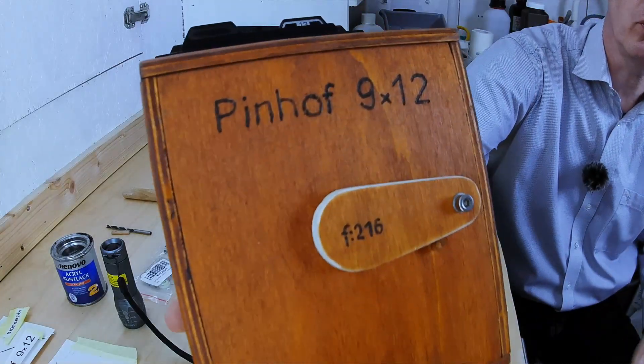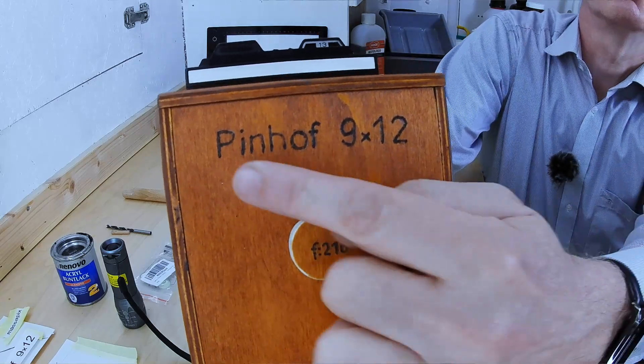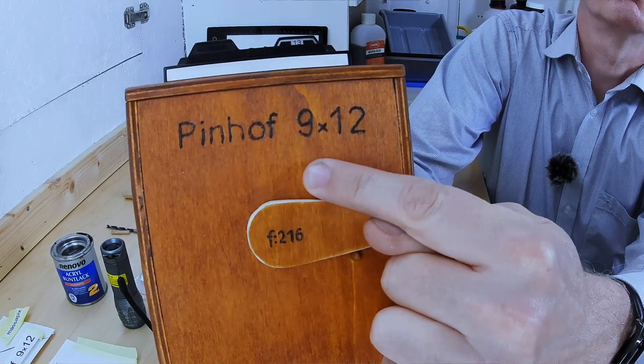But maybe let's start with some five improvements. The first improvement for sure is the camera needs a name, and so far I described already the name will be Pinhoff 9x12. This is the camera name, and let me introduce you a short video how to do it because it is quite simple.